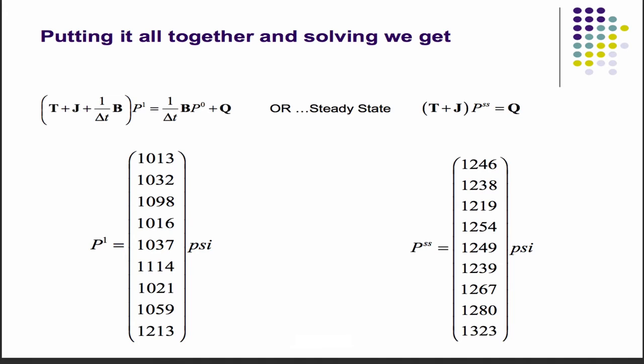If you put it all together for an implicit solve, solving this equation implicitly from the zero to the first time step, these are the results you get over one time step. Or in steady state, if you take out the accumulation term, the B term, because you can solve the steady state equation, and you get this guy.